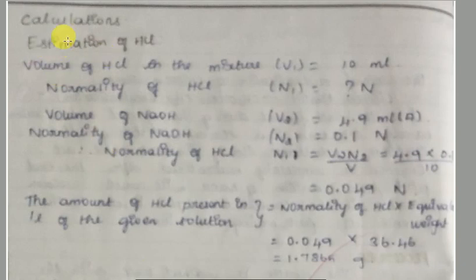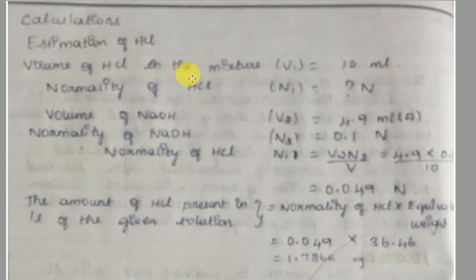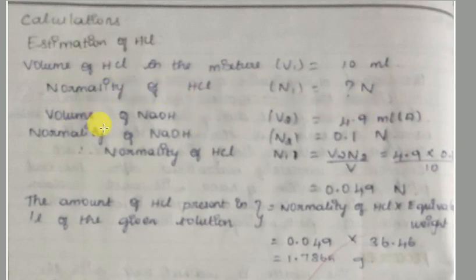Calculation part, first part: estimation of hydrochloric acid. The volume of hydrochloric acid in the mixture of acids is 10 ml. We can calculate the normality of hydrochloric acid using the volume of NaOH from the burette.